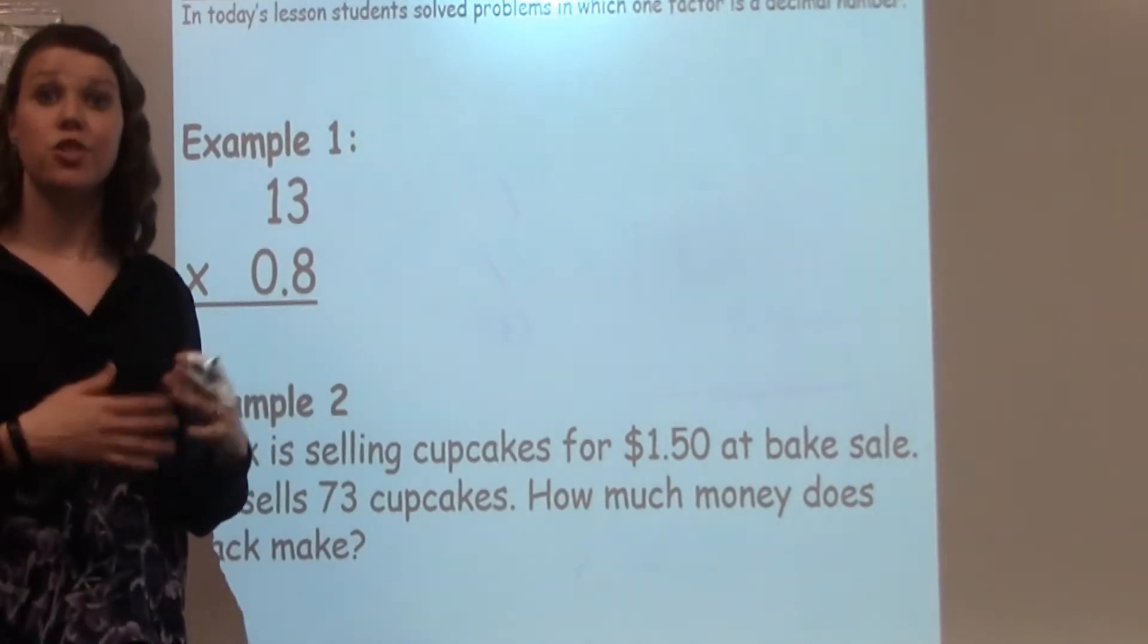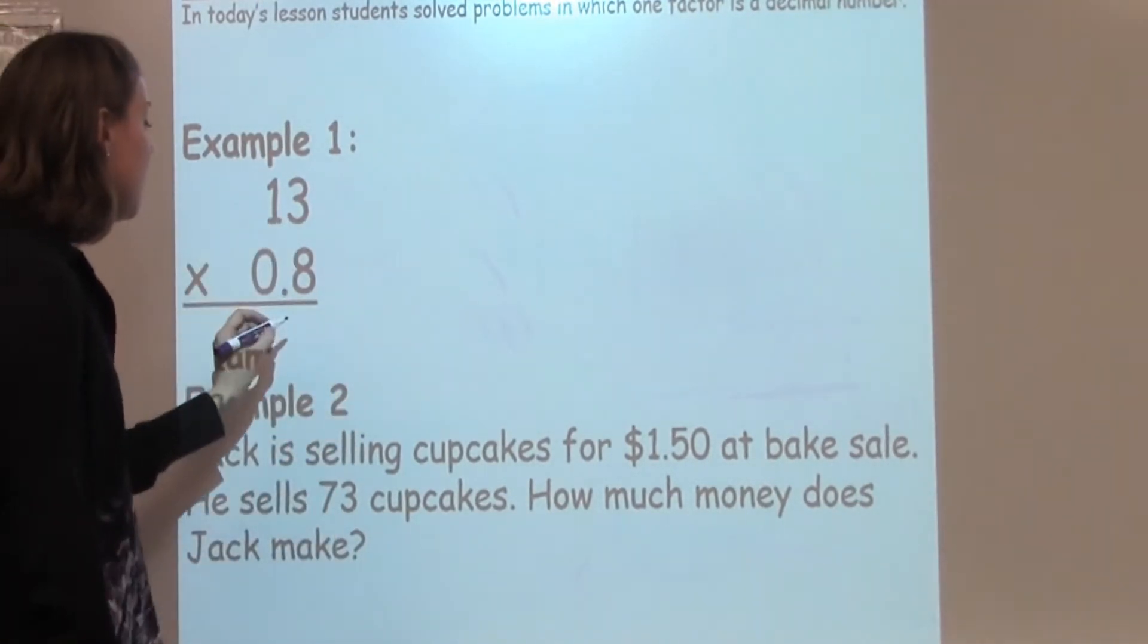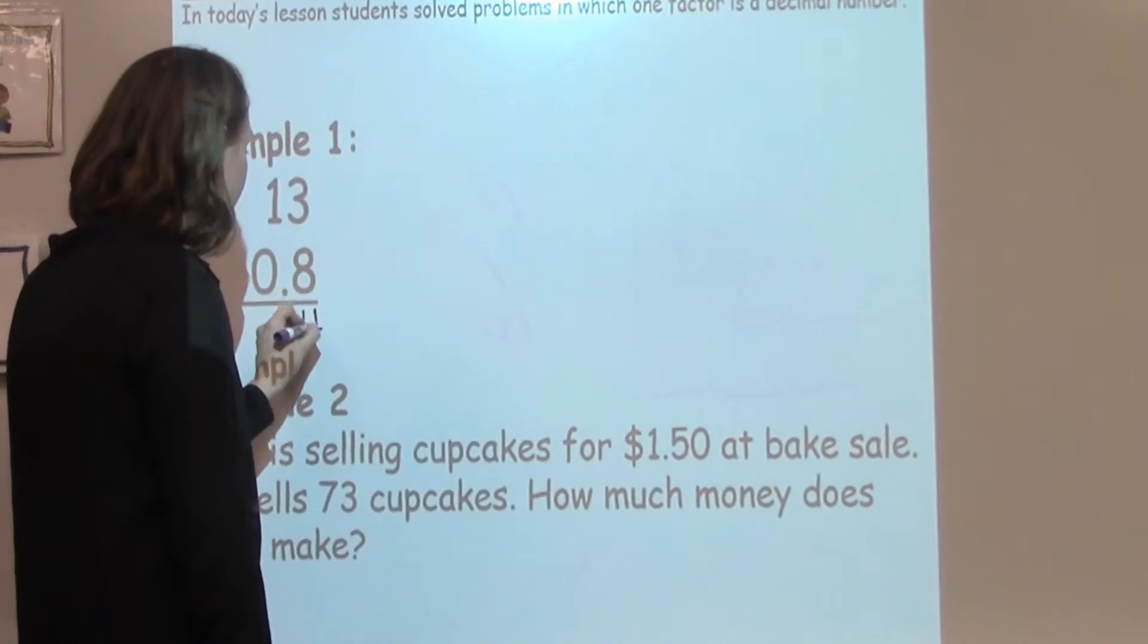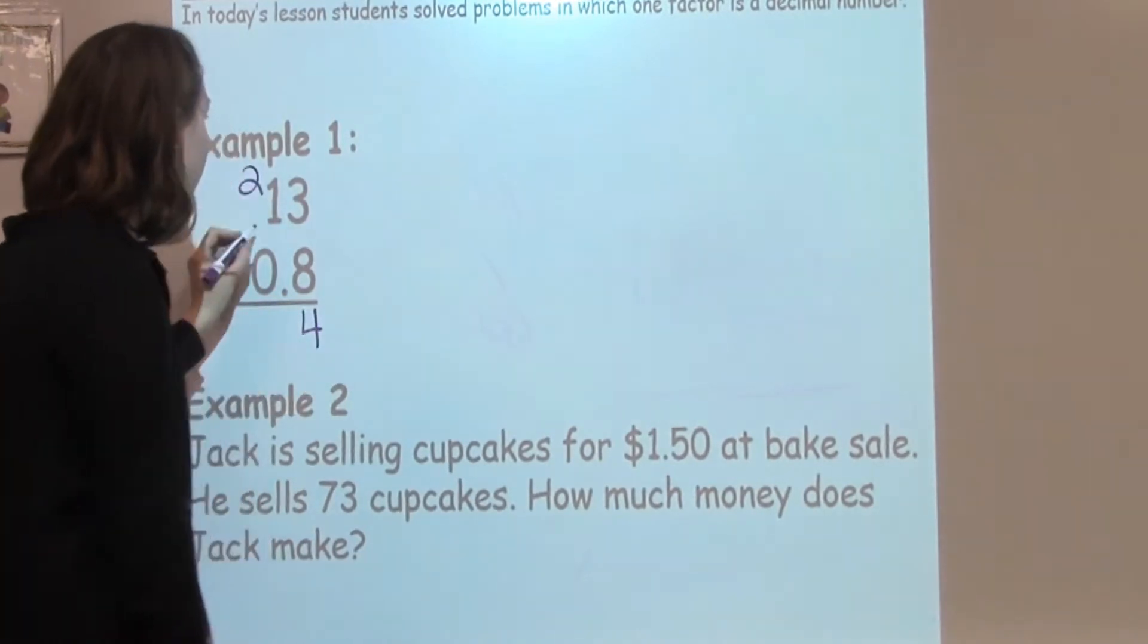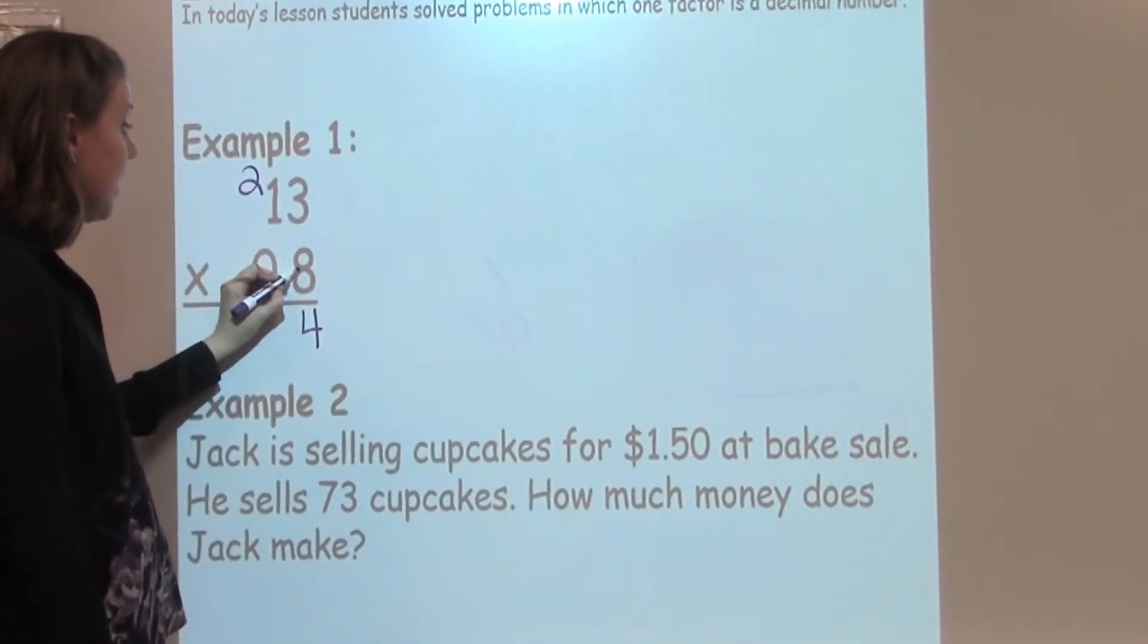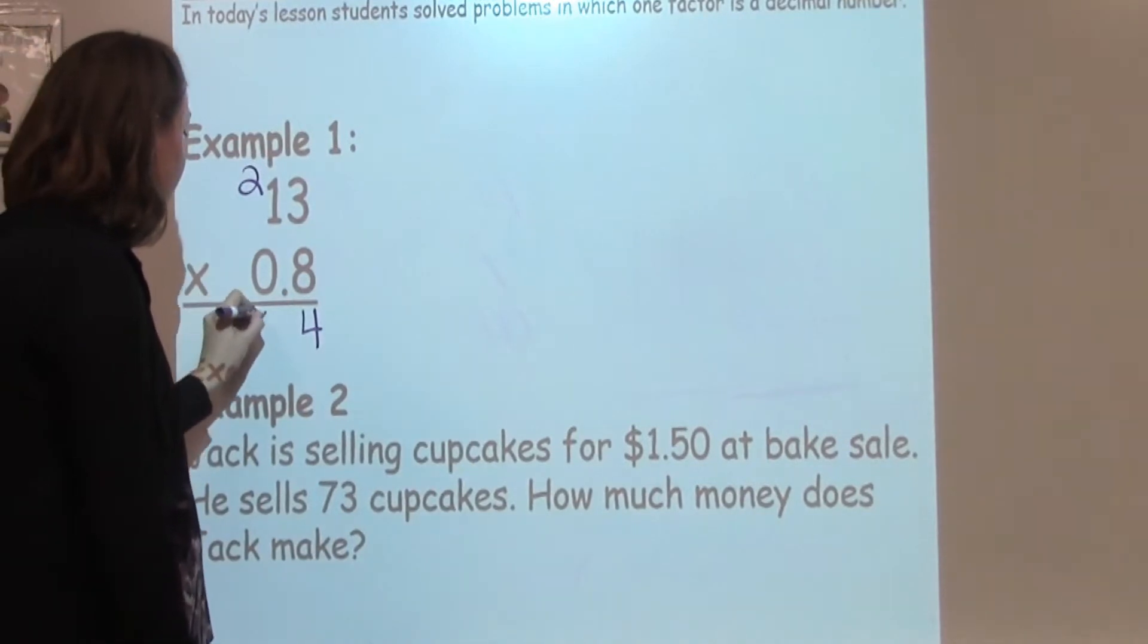Just to go ahead and multiply this traditionally, I'm going to take 3 times 8, which is 24, put my 4 down, carry my 2. I know 1 times 8 is 8, plus 2 more is 10.